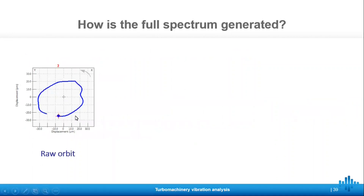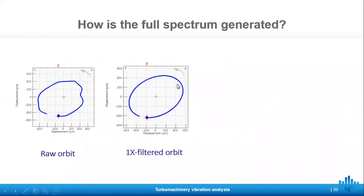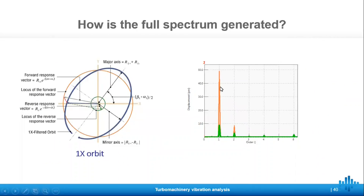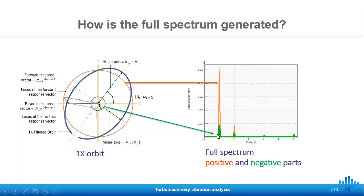Let's take a look at how the full spectrum is generated. We begin with the raw orbit shown on the left with all frequency content, and then the 1x filtered orbit is extracted from that. We then decompose that orbit into a circle — the gray vector minus the red vector corresponds to a green radius and an orange radius. The blue elliptical orbit is a sum of the positive orange circle plus the negative green circle. The orange circle will show in the spectrum with orange peaks and the green will also be overlaid in the same graph, so we can easily see the positive and negative parts of the orbit and at a glance get an understanding of how it is moving.